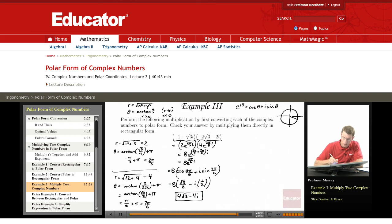And so what we get there, that simplifies down to 4 root 3 minus 4i. And so now we've done it. We converted each number into polar form, we multiplied them in polar form which is very easy, and then we converted the polar form back into rectangular form to give us our answer.